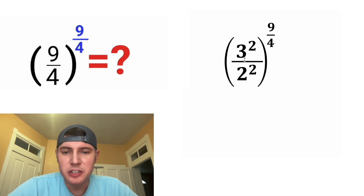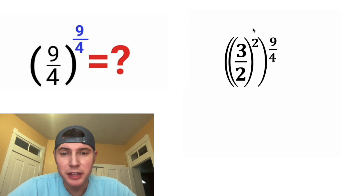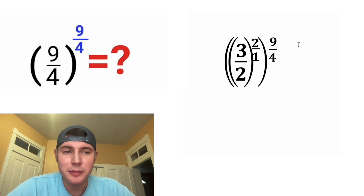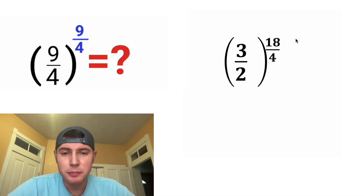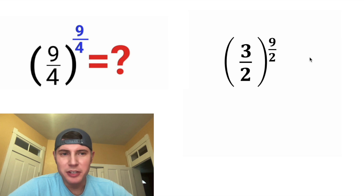And instead of 3 squared over 2 squared, I can just do 3 over 2, whole thing squared. And now we can multiply these two exponents, so let's make this a 2 over 1. And 2 over 1 times 9 over 4 gives us 18 over 4. Let's simplify: 18 divided by 4 is 9 over 2.